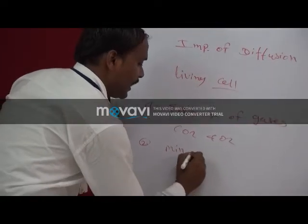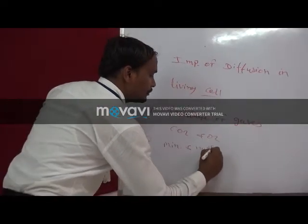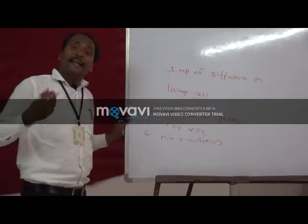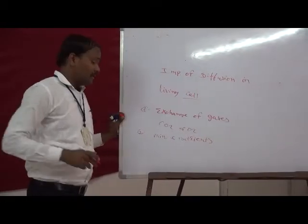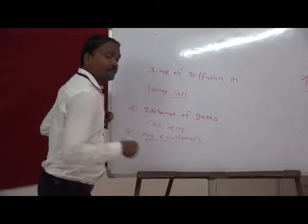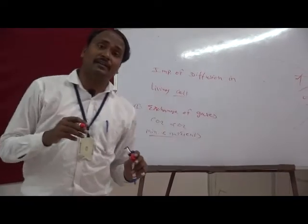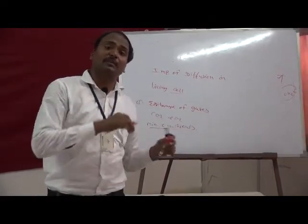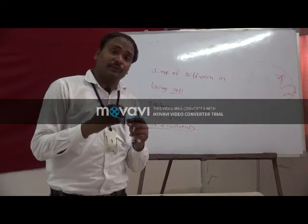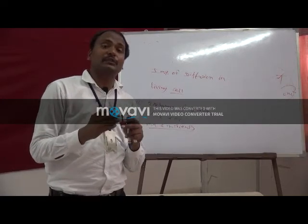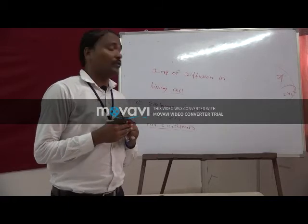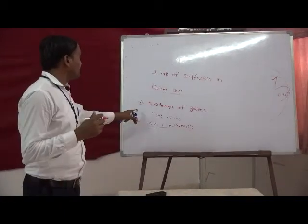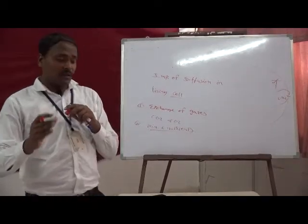The minerals and nutrients dissolved in water are absorbed by the plant. In this process of absorption of minerals and nutrients, diffusion plays an important role. Another important function of diffusion for the plant is the absorption of water.